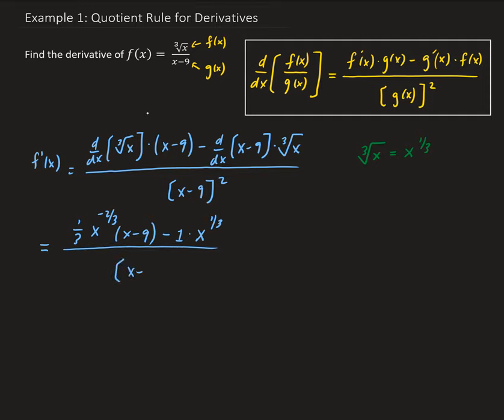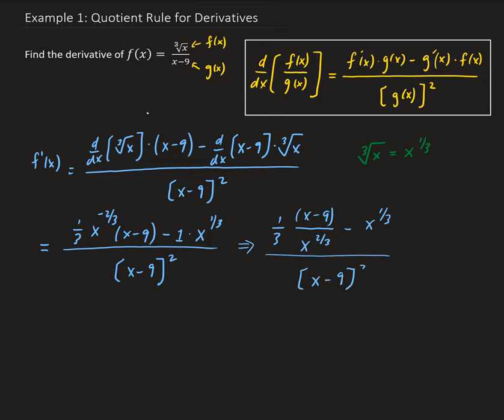And this is all divided by x minus nine squared. So that is the derivative. Now from here, we can simplify a little bit more. We can rewrite this as one-third times x minus nine, and this is divided by x to the two-thirds — changing the sign of negative two-thirds to positive when we move it into the denominator — minus x to the one-third.